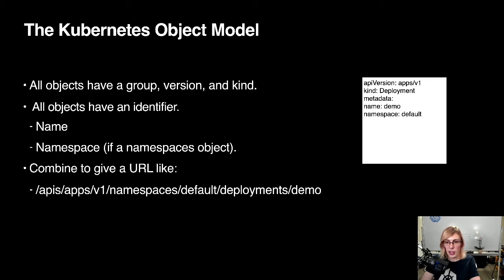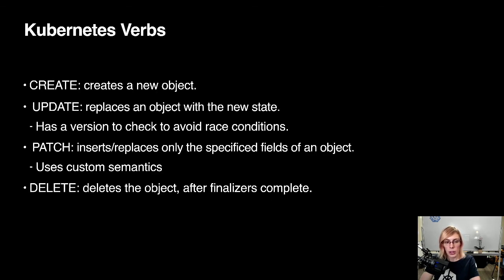Kubernetes itself is a REST-ish HTTP API. We often don't see that because we're busy dealing with a typed client or kubectl, but this all forms together to create a fairly long API path that we use to identify any individual object. Kubernetes supports a bunch of different verbs — I'll point out the ones relevant to making changes.